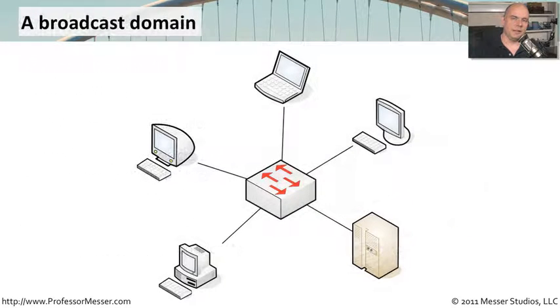In the picture earlier of a collision domain, I showed you this picture and said, this gets rid of collisions, because everybody is directly connected to a switch. But broadcasts don't work this way. In this particular picture, everybody hears the broadcasts that are sent out. If this one machine sends out a broadcast, that switch is going to automatically copy it to everybody else who's on that particular subnet.